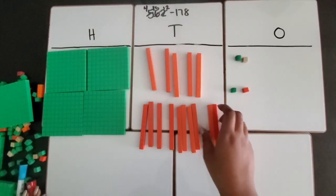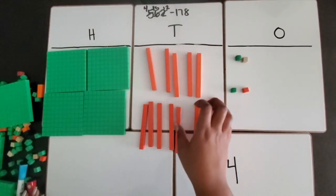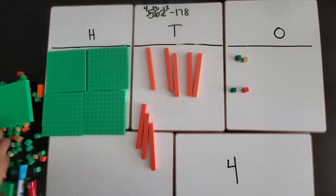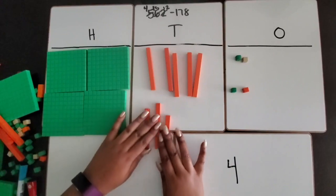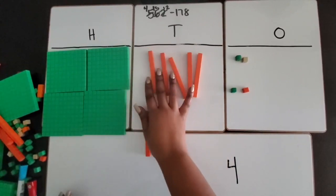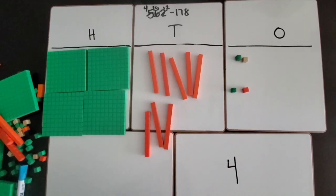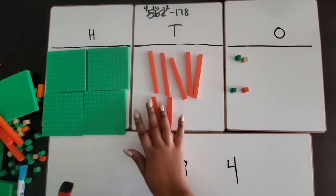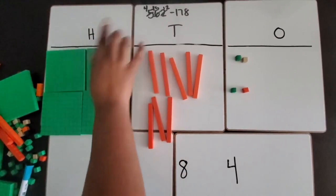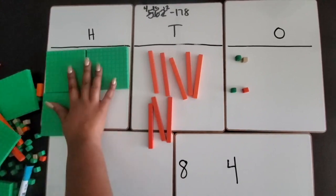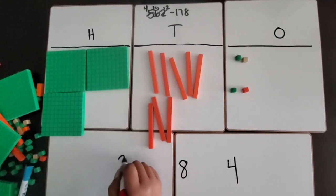We have 15 tens, now I have enough to subtract 7 tens. One, two, three, four, five, six, seven tens. I still have one, two, three, four, five, six, seven, eight tens remaining. I'm going to write that down here. Now I still have 400, but I need to subtract one. I take one away, I still have 300 remaining.